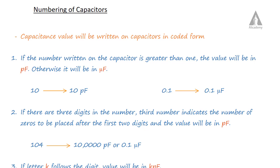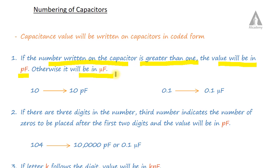This is the numbering of capacitors. First one: if the number written on the capacitor is greater than one, the value will be in picofarad.